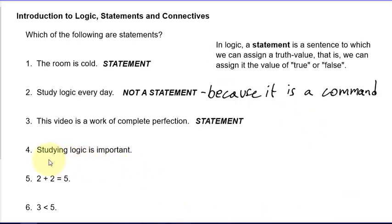In logic, a statement is a sentence to which we can assign a truth value — that is, we can assign it the value of true or false. Number four says: studying logic is important. It doesn't matter if that's actually true or not; it's the fact that you can assign to it a truth value. You can decide to assign it the value of true or the value of false. So number four is a statement.